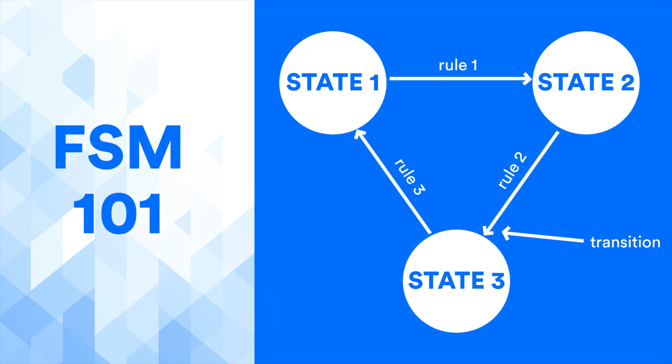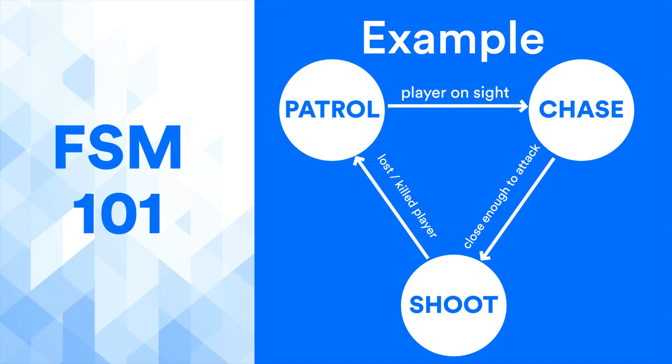A game entity can only be in exactly one state at any given time. For example, let's take a look at an AI guard character in a typical shooting game. Its states could be as simple as patrolling, chasing, and shooting.